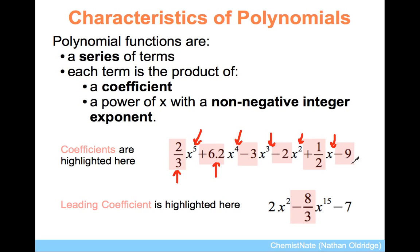And this one doesn't even have x written on it, but that represents x to the 0, because anything to the power of 0 is 1, and 9 times 1 is also 9. So we don't bother writing x to the 0 ever in polynomial functions.